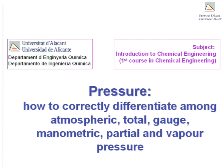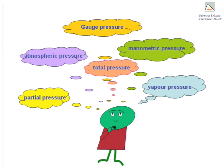Pressure. How to correctly differentiate among atmospheric, total, gauge, manometric, partial, and vapor pressure. A typical mistake that chemical engineering students sometimes make in calculations is to use the wrong type of pressure. This video aims to clarify when each one is to be used.